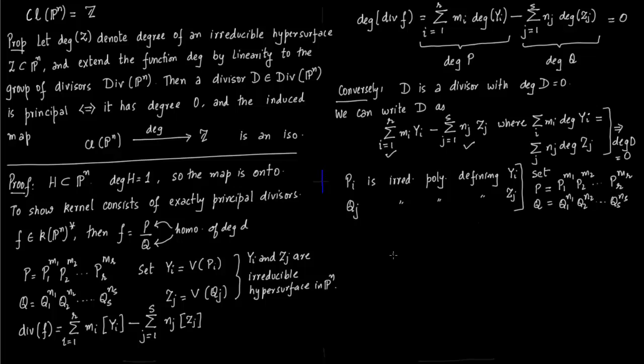Similarly for Q, Q_1 corresponds to irreducible hypersurface Z_1, Q_2 to irreducible hypersurface Z_2, and you take corresponding integers in the numerator.